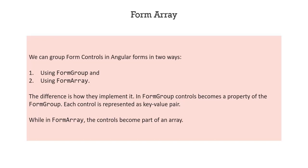So what is the difference between them? In a form group, when we group some form controls together, the controls become a property of the form group, and each control is represented as a key-value pair. But in a form array, the control does not become a property — instead, it becomes an element of that form array. So a form group is an object, but a form array is an array.